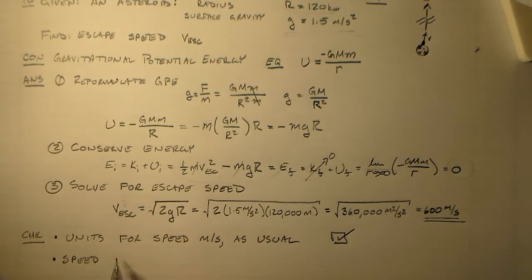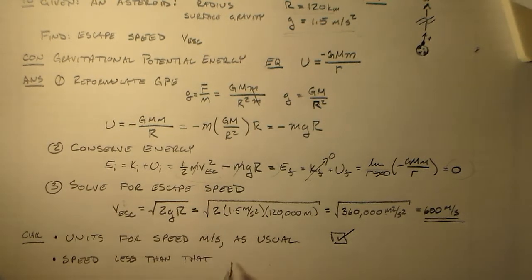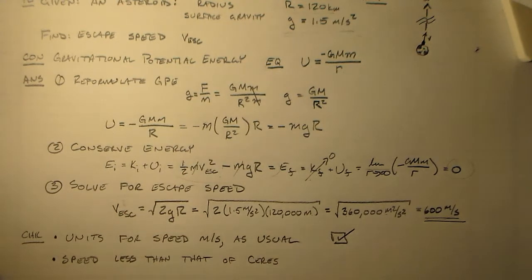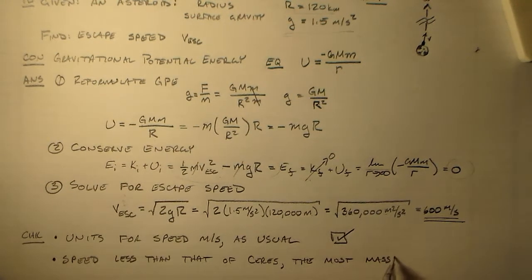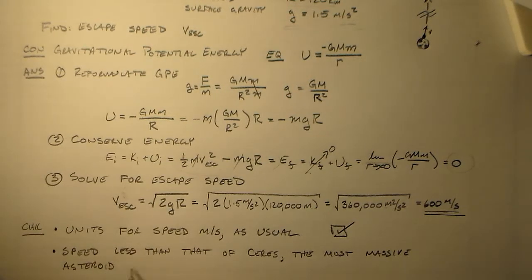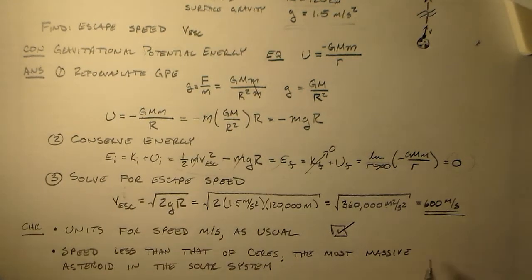Is less than the escape speed of Ceres. I'm going to call it Ceres. So, Ceres, according to the book that I was using when I was doing this problem, is the most massive asteroid in the solar system. Which is good. I mean, we want that speed to be less than the speed of the most massive thing in the solar system. If it was greater then we'd have some cognitive dissonance going on. There'd be something wrong. And there isn't anything wrong. This all looks good.